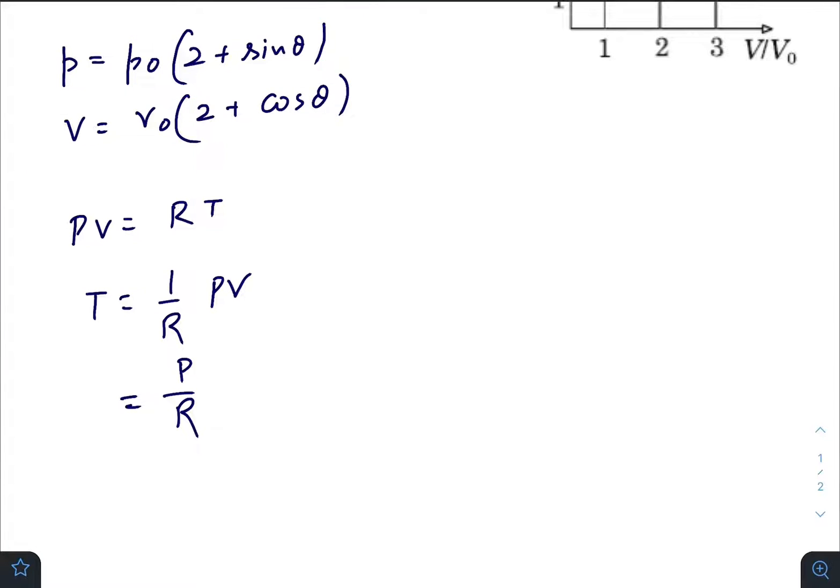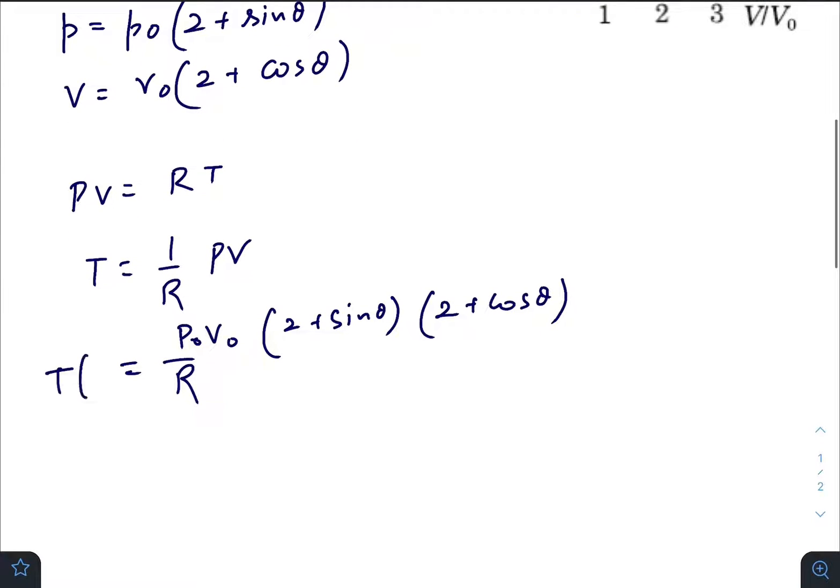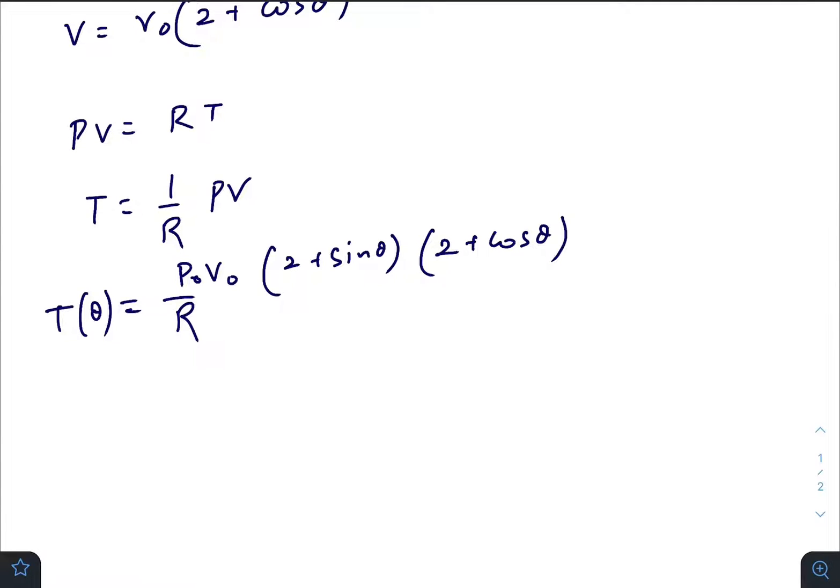So we will get p₀V₀(2 + sin θ)(2 + cos θ). We have got T as a function of theta because theta is a parameter which can be easily manipulated. So if we write p₀V₀ by R times 4 plus